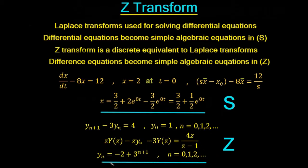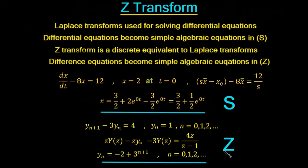This shows us that we can use the Z-transform as a discrete equivalent of the Laplace transform. Don't worry too much about the example here — we'll work through a few examples in later videos. It's just to give you an indication of where the Z-transform fits in to the whole pantheon of transforms.